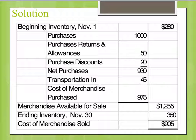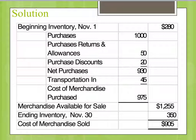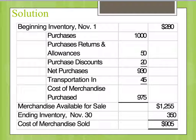Here I have a schedule set up. It starts with beginning inventory of $280. I have purchases minus purchase returns and allowances minus purchase discounts to give net purchases of $930. Adding transportation in gives a cost of merchandise purchased of $975. Merchandise available for sale equals beginning inventory plus cost of purchases: $1,255. Subtracting ending inventory of $350, the cost of merchandise sold is therefore $905.